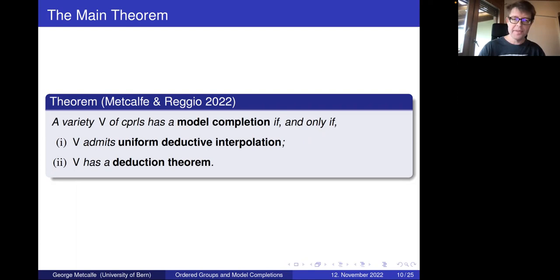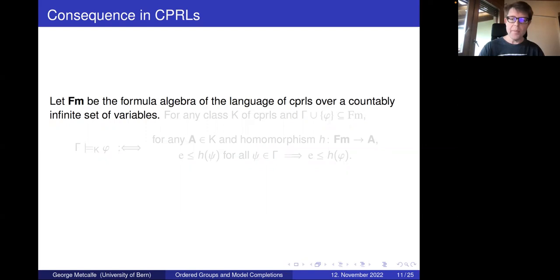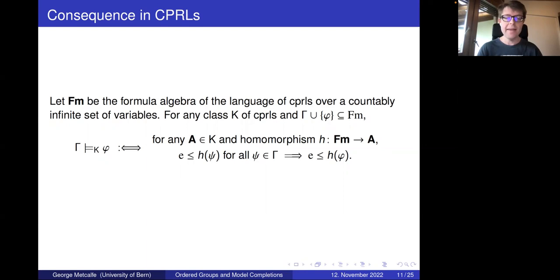To give definitions of these terms, we need to speak about consequence in CPRLs, which is defined in a very standard way. Let Fm be the formula algebra of the language of CPRLs over some countably infinite set of variables. If we fix some class K of CPRLs — maybe Boolean algebras, MV algebras, Heyting algebras, whatever you like — then a formula φ is a consequence of a set of formulas Γ in the class K if for any homomorphism from the formula algebra to a member of K, if this homomorphism makes everything in Γ bigger than E, then it makes φ bigger than E. This delivers the usual notion of consequence in intuitionistic logic, Łukasiewicz logic, linear logic, and so on.